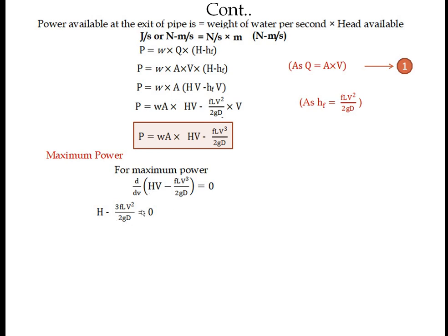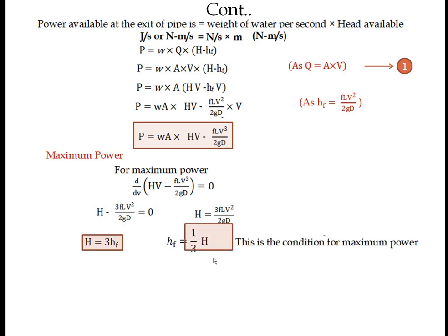From the differentiation: H = 3fLV²/(2gD). Since fLV²/(2gD) = HF (head loss due to friction), this becomes H = 3·HF, or equivalently HF = H/3. This is the condition for maximum power: the head loss due to friction must equal one-third of the head available at the entrance of the pipe.